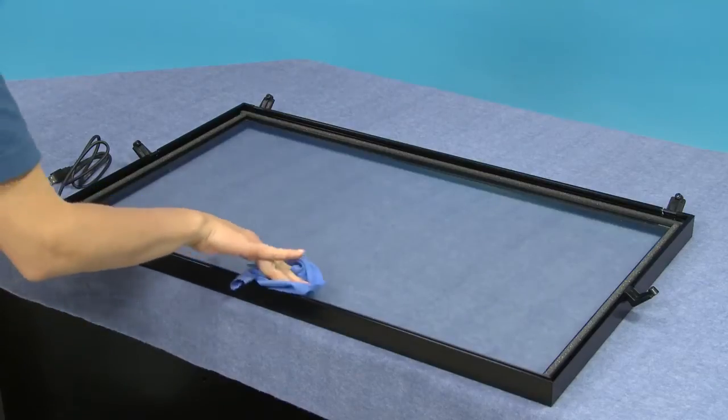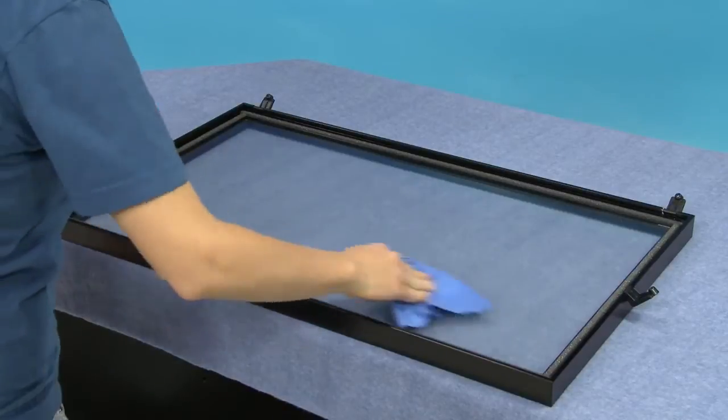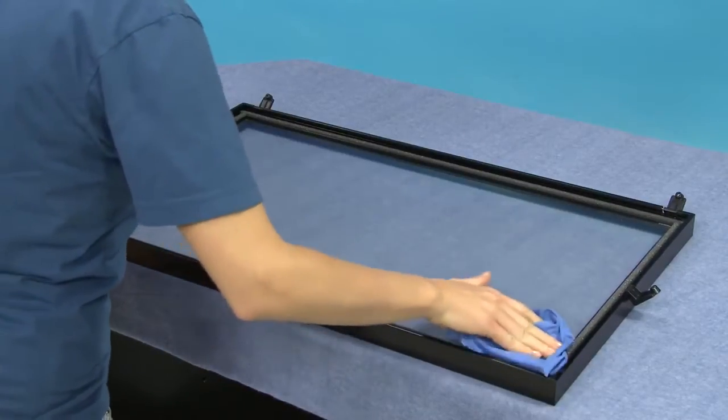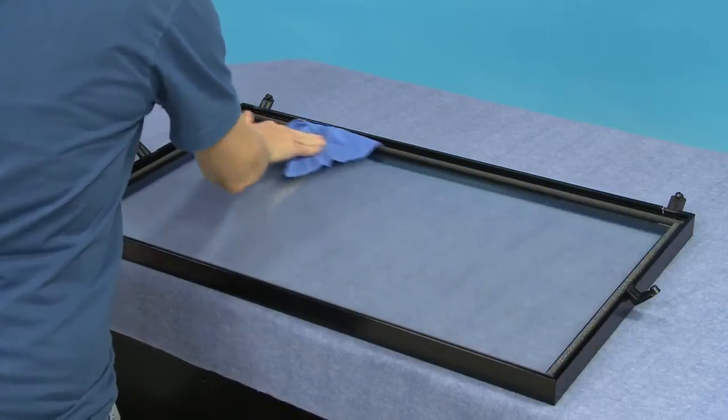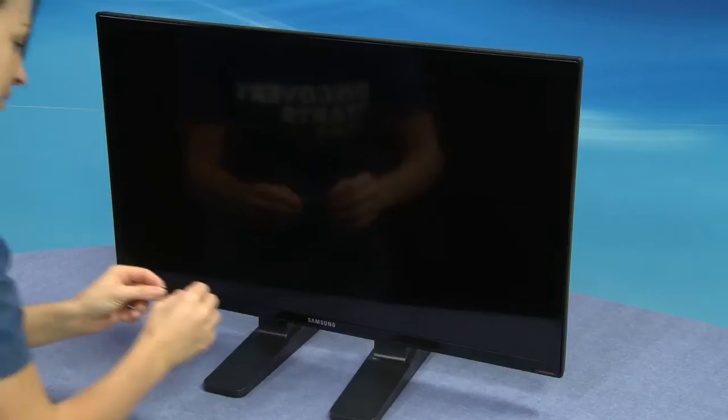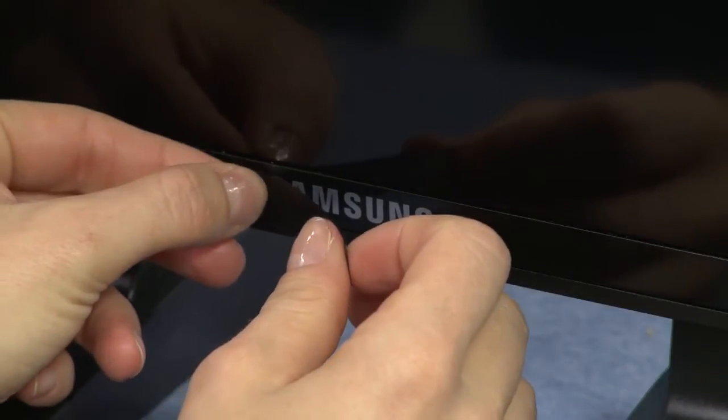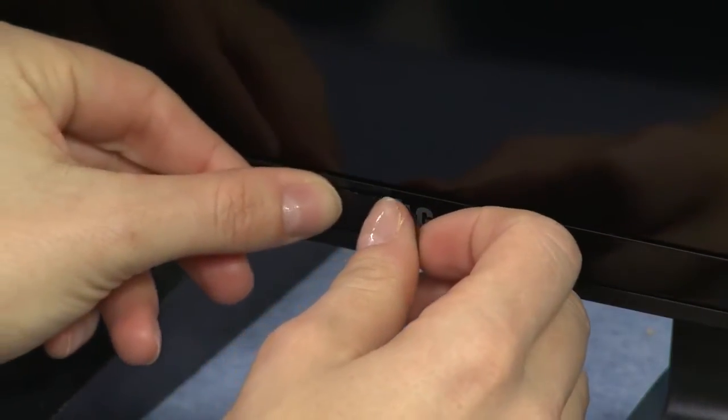After removing the protective film, use the provided cleaning cloth to clean and remove any dust and fingerprints on both the display and the overlay. If you don't, they may be visible through the overlay. Now, since the overlay has its own logo, use the provided sticker to cover the original logo on the display.